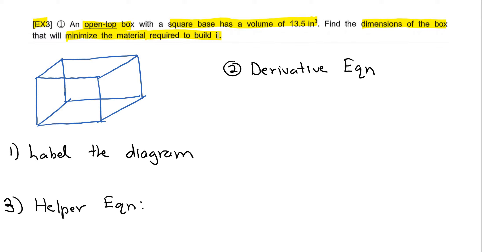For part one, I need to label the diagram. This is an open top box with a square base, so since I have a square base, the bottom length and the bottom width will be the same. This red distance right here, let's call that x, and this red distance right here will also be x because we have a square base. Then I need to label the height, so this height of the box will be y.